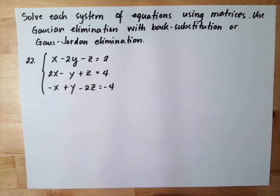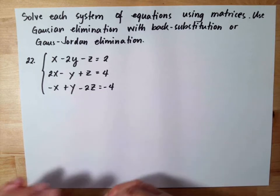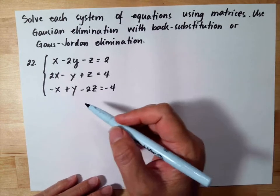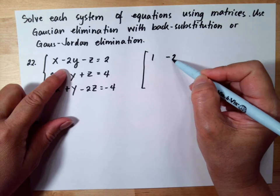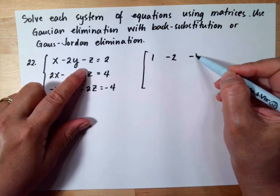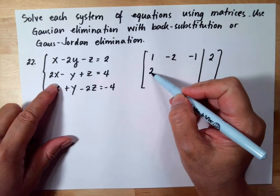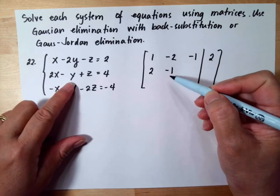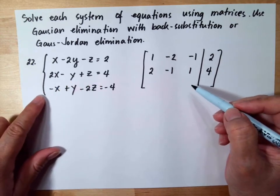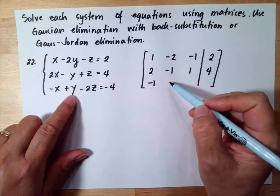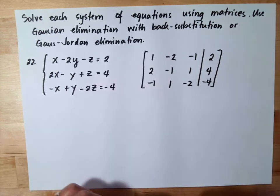The first thing we need to do is convert these three equations into an augmented matrix. So we have 1, negative 2 for Y, and negative 1 for Z, equal to 2. Then 2 for X, negative 1 for Y, and 1 for Z, equal to 4. Then negative 1, positive 1, negative 2, and negative 4. So this is our augmented matrix.